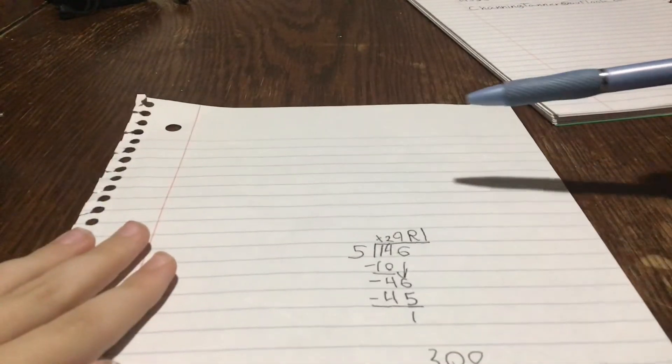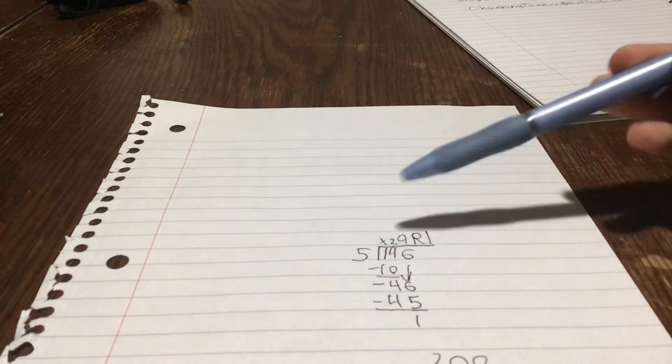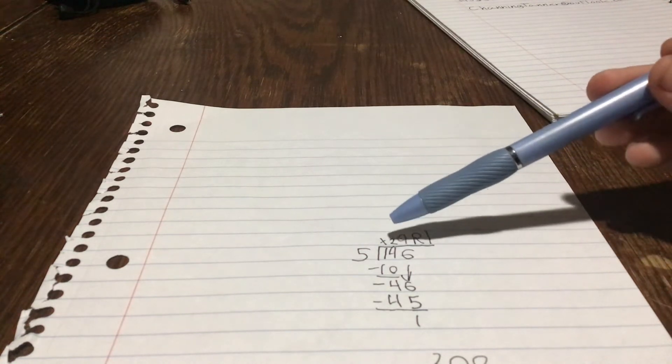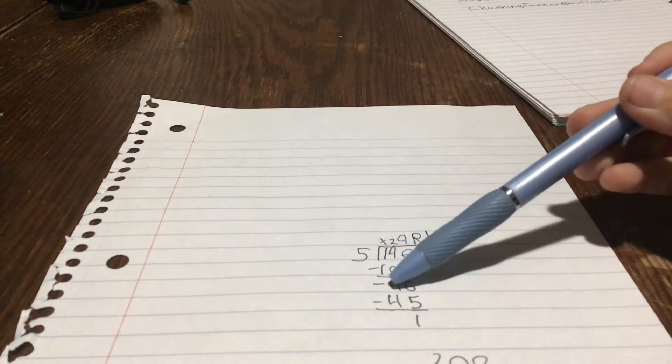Alright, moving on to the next one. Division. 146 divided by 5. Now first of all, you want to do two, because that five goes into 14 two times and you got 10, but you'll have a four.